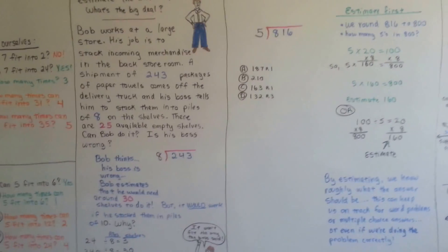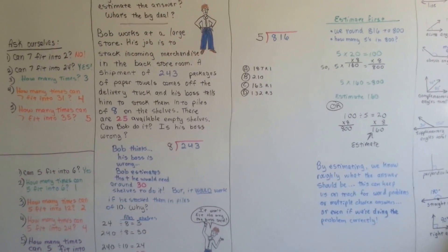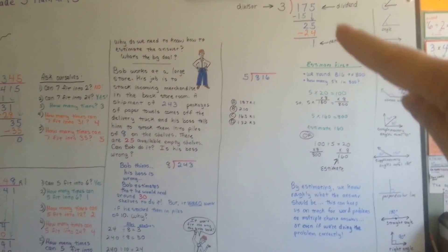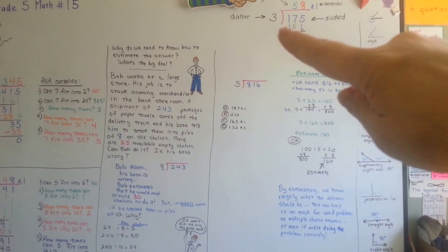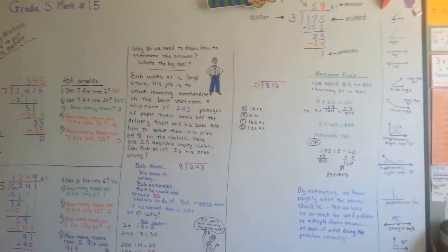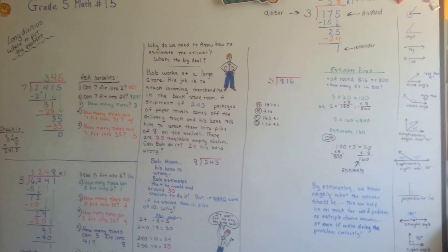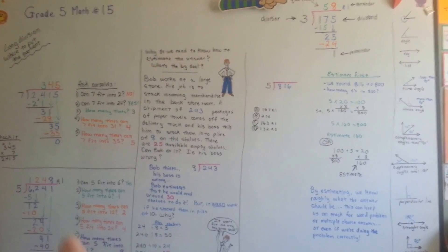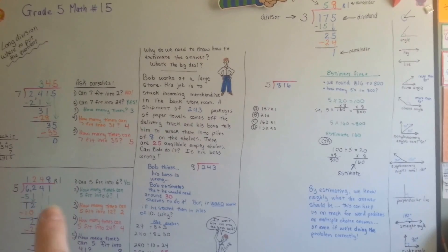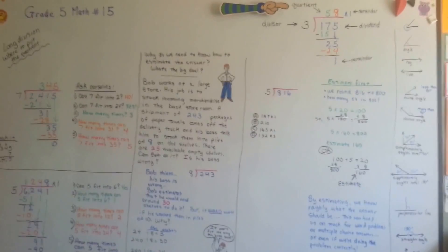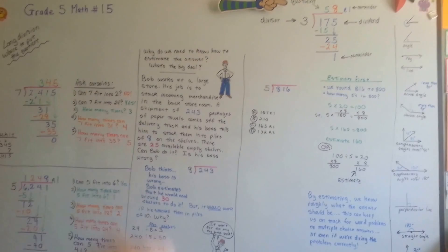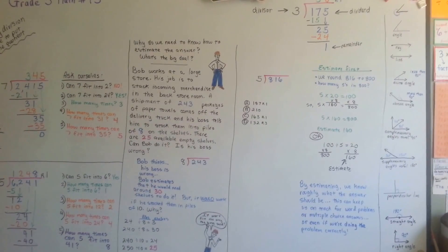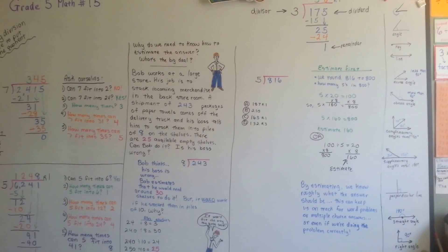So estimating can help us — give it a chance. Don't be so hard on estimating; he's just trying to help us. Remember that the dividend is the big number you're going into and the divisor is the number that's going into the dividend. Remember the quotient is the answer and that the remainder goes next to the quotient. Remember to bring your numbers down and to ask yourself what number the divisor can fit into, and block it off with your hand to help you. Long division is not hard, it's just long. See you next video — bye!